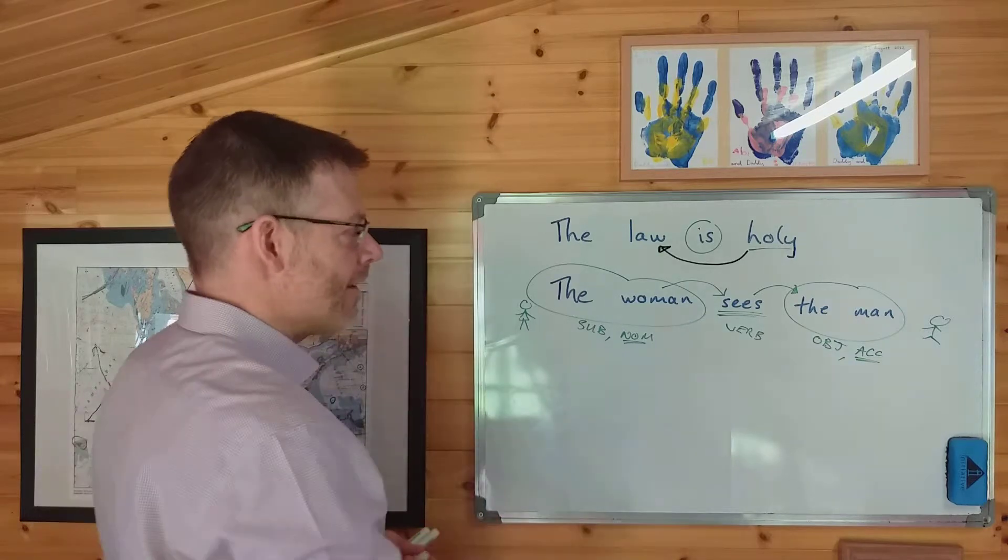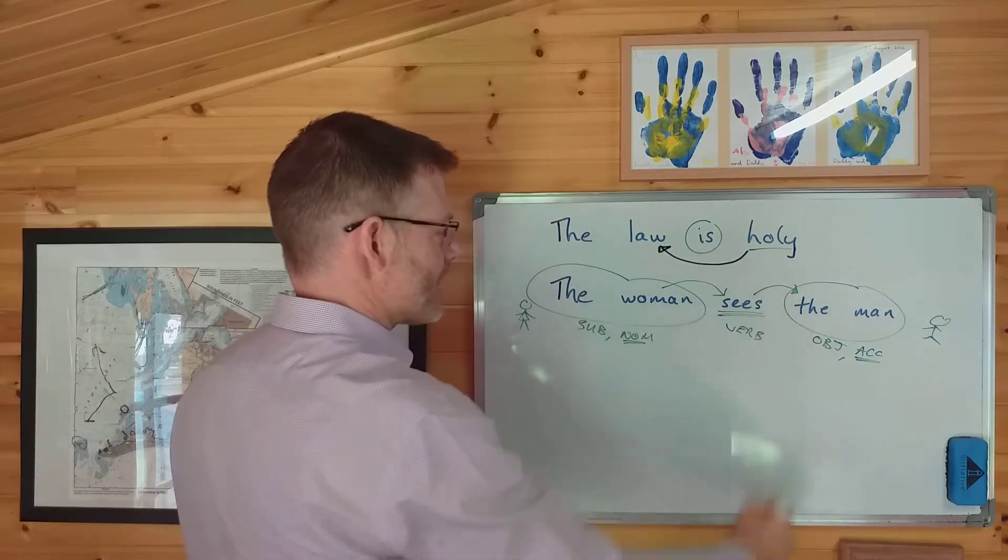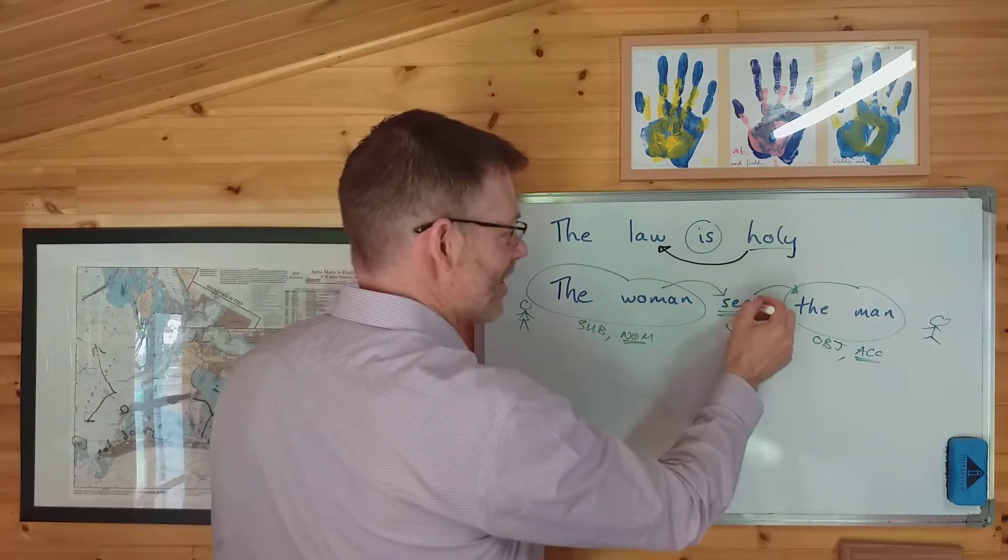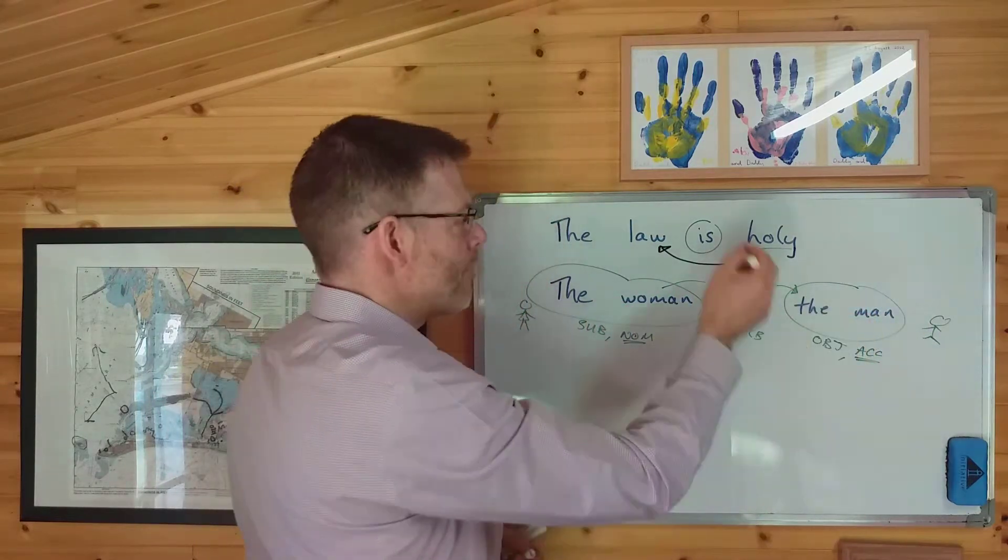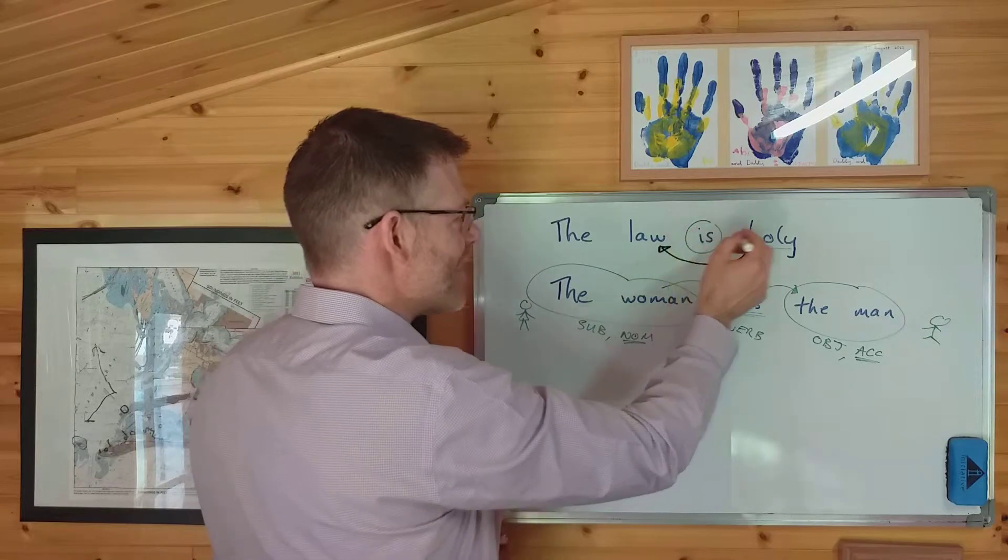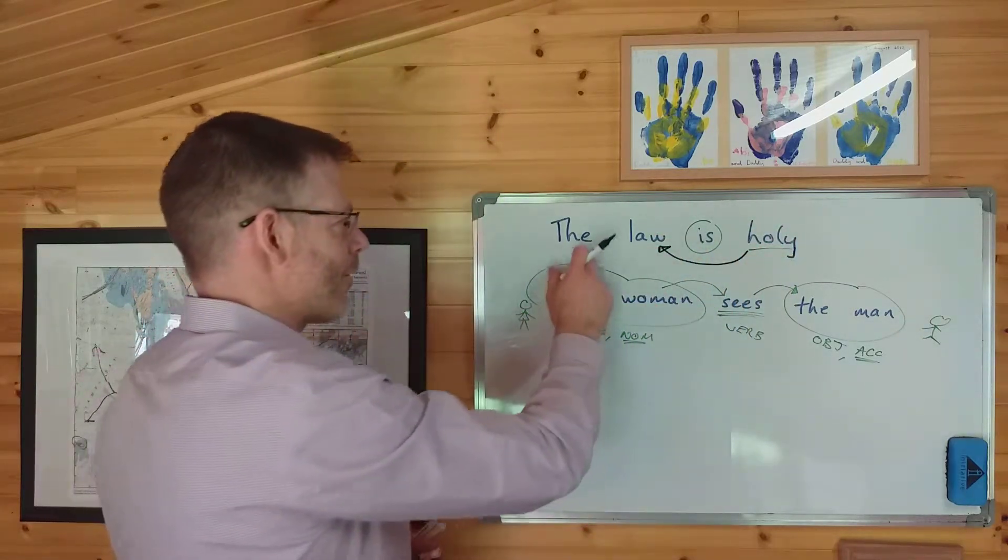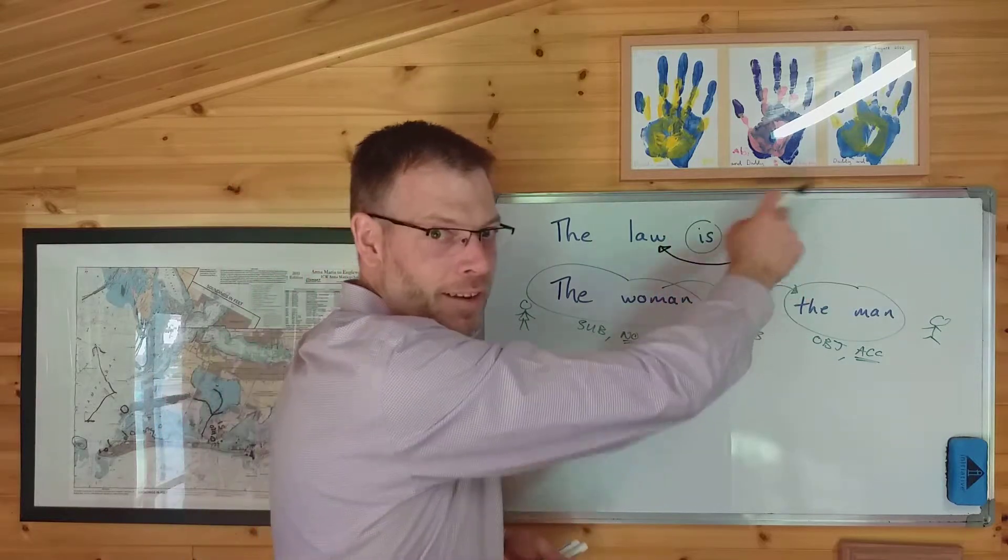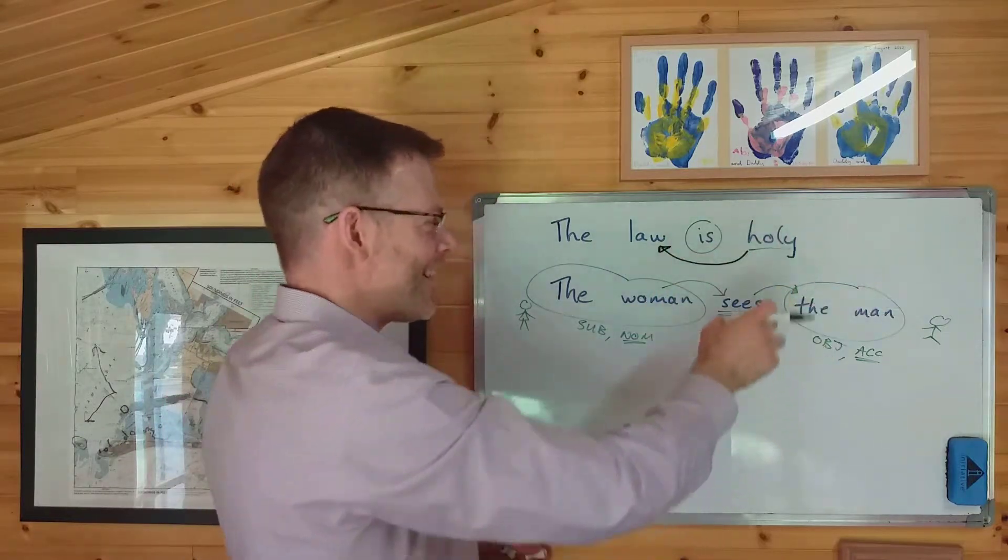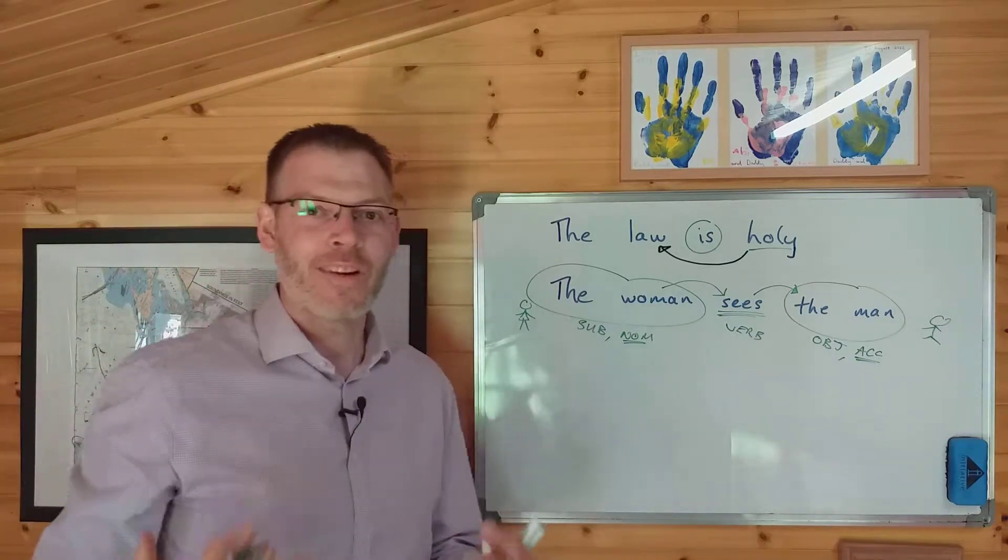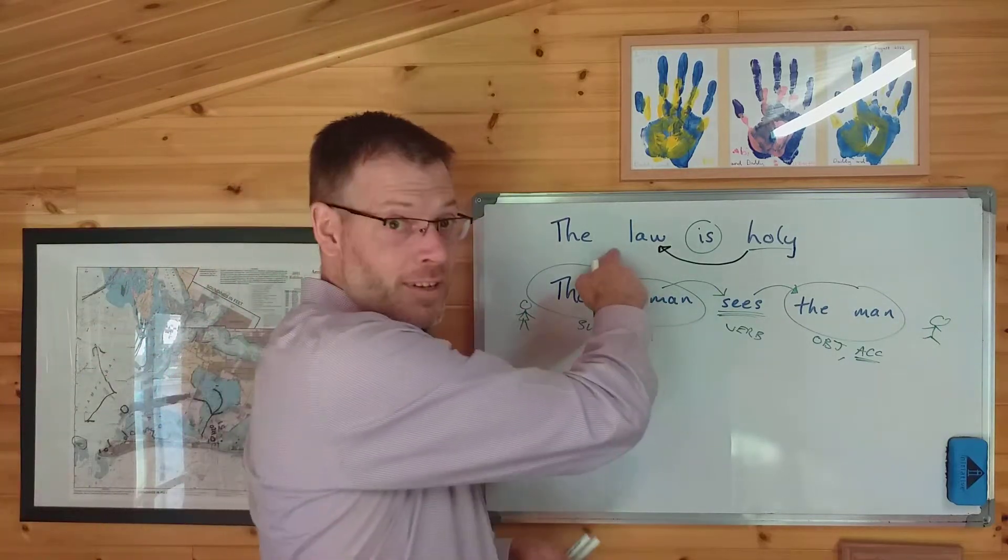To put it another way, in this sentence, the woman sees the man, the verb tells you that one thing does something to another thing. But in this sentence, the law is holy, the verb doesn't do anything of the sort. It's not telling you that the law is doing something to holy, is it? It's telling you that holiness is a quality of the law. So from a linguistic, philosophical point of view, this is a completely different kind of sentence.